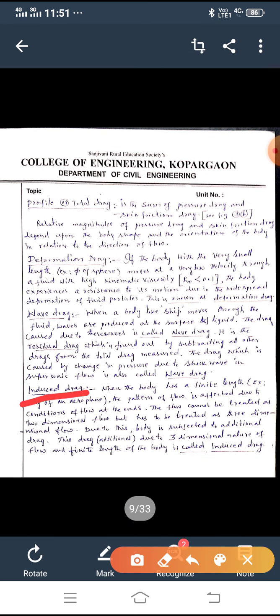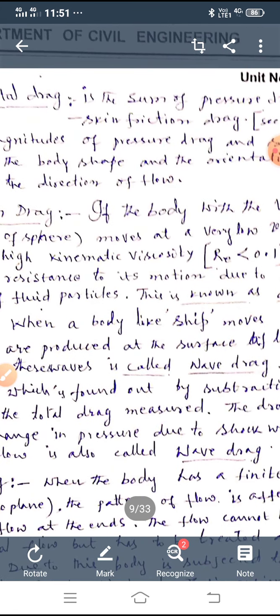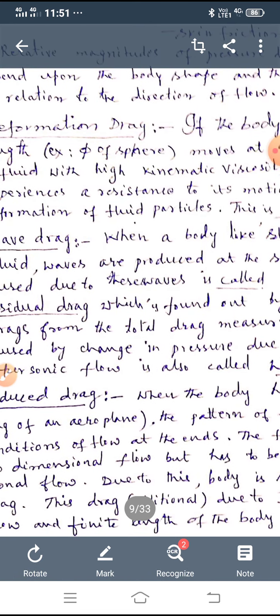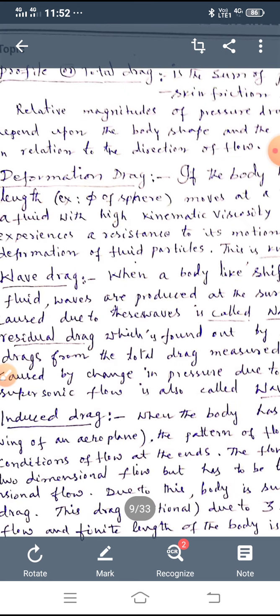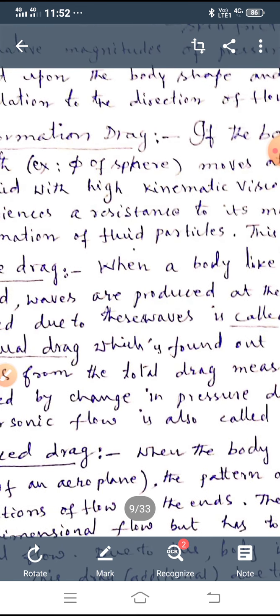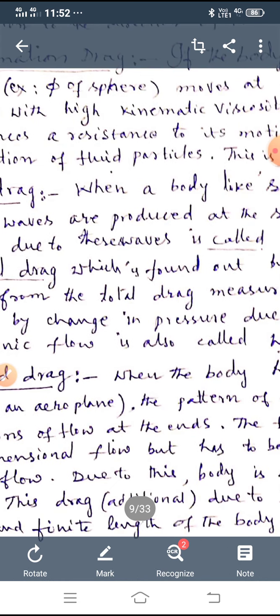Last one, induced drag. What is meant by that? When the body has a finite length, example, wing of an aeroplane, the pattern of flow is affected due to conditions of flow at the ends. The flow cannot be treated as two-dimensional, but the flow has to be treated as three-dimensional flow. Due to this, body is subjected to an additional drag. This additional drag due to three-dimensional nature of flow and finite length of the body is called induced drag.